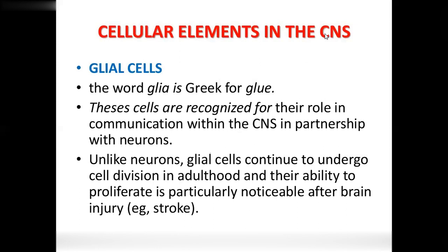The cellular elements in the CNS include two types of cells. Neurons are electrically excitable cells of the nervous system. Neuroglial cells, also called glia, are supporting cells. These cells are recognized by their role in communication within the CNS, in partnership with neurons.